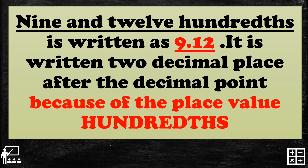Nine and twelve hundredths is written as nine point twelve. It is written with two decimal places after the decimal point because of the place value hundredths. The last decimal digit is two, which has a place value of hundredths.